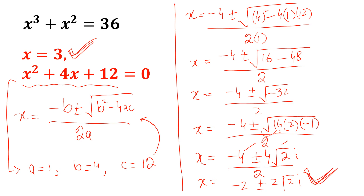So x is equal to 3, and x is equal to minus 2 plus minus 2 square root of 2 iota are the solutions to this equation. Like the video, share with your friends, and don't forget to subscribe to my YouTube channel. Thank you.